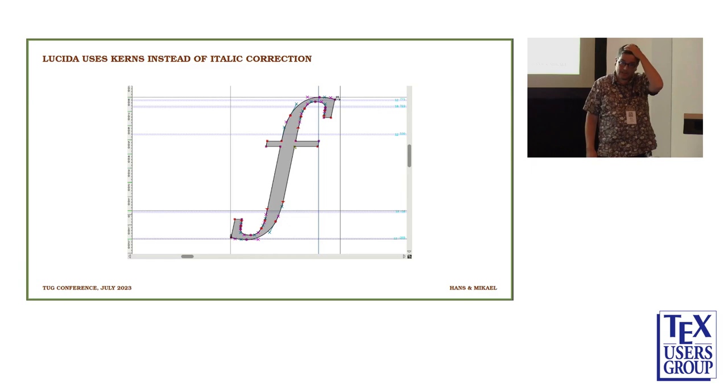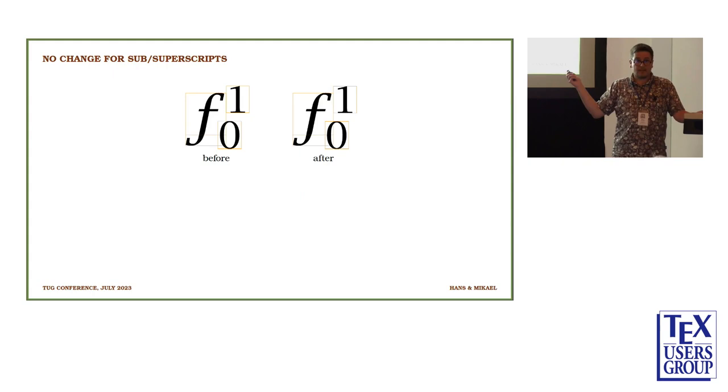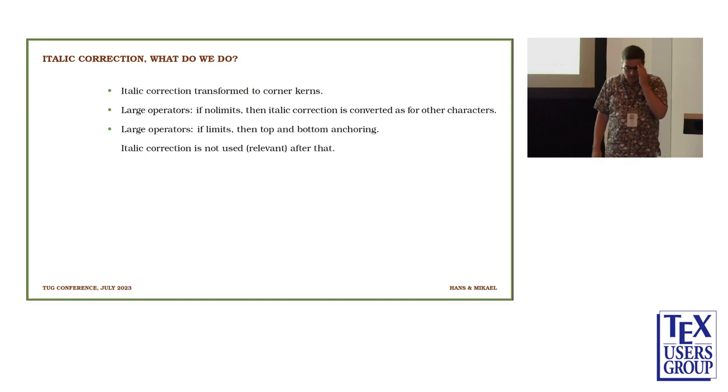This is Lucida, the F in Lucida. It doesn't have italic correction at all. I don't think Lucida has italic correction at all. This is the same example in Lucida, before and after. It looks good in both cases. This font has corner kerns. So here we have the zero, it's already there. You see we have not destroyed these examples even though the fonts are behaving differently.